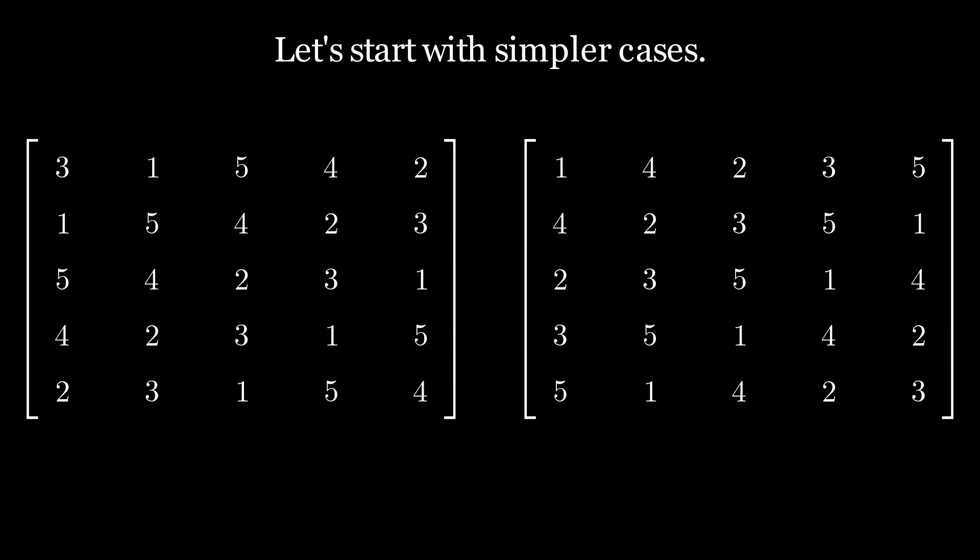This might lead to the suspicion that in odd-sized matrices, all numbers will always appear on the main diagonal, whereas in even-sized matrices, it is impossible for all numbers to appear simultaneously on the main diagonal.